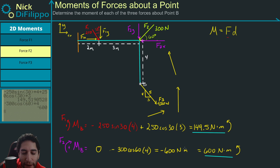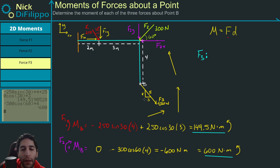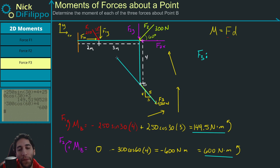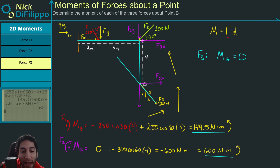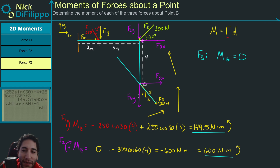Now let's look at F3. F3 is really easy — we see that F3 goes completely through point B, so F3 has no moment. The moment about point B is equal to zero. If we didn't see that right away and broke it into components F3X and F3Y, we'd find that both components also go through point B, giving no perpendicular distance and confirming the moment about point B is zero.